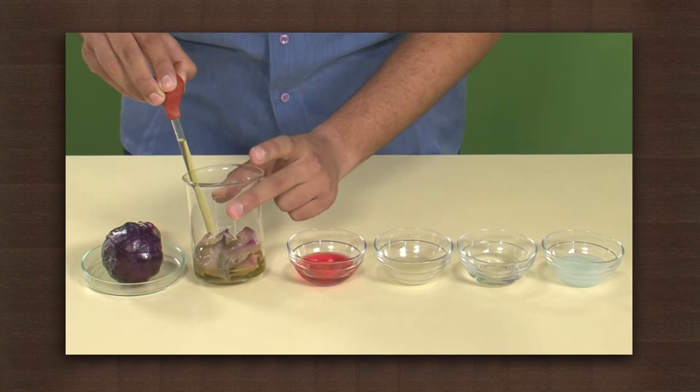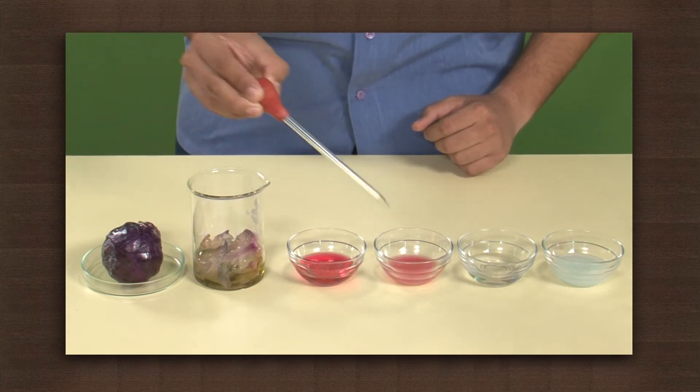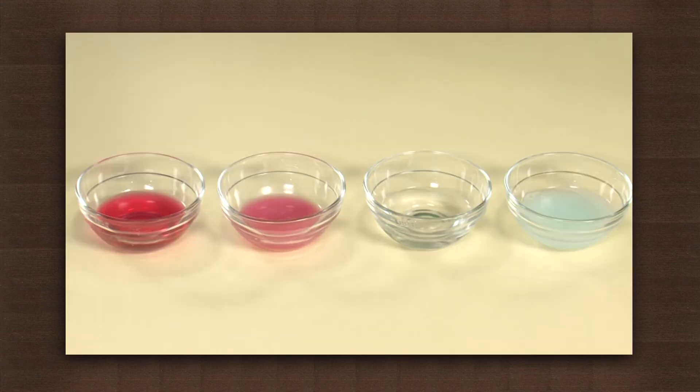You will see that the red cabbage juice turns deep red or magenta in presence of the acid and green in presence of bases.